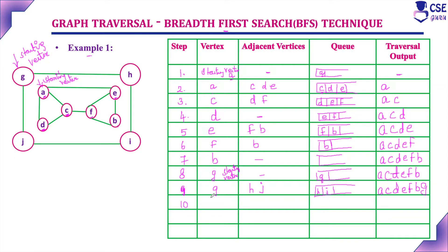The next vertex in the queue is H. We visit vertex H and its adjacent unvisited vertex is I — G is adjacent but already visited. So I is included in the queue. Already in the queue is J; now we also include I. The traversal output is A, C, D, E, F, B, G, H.